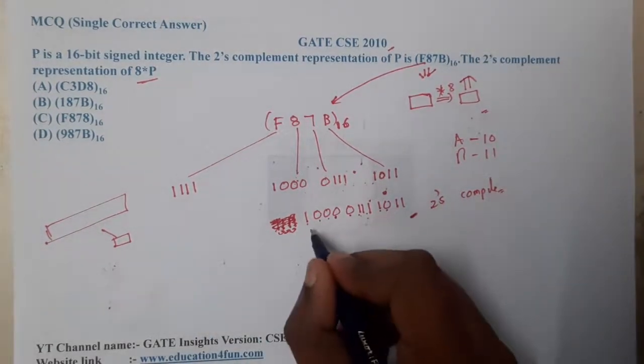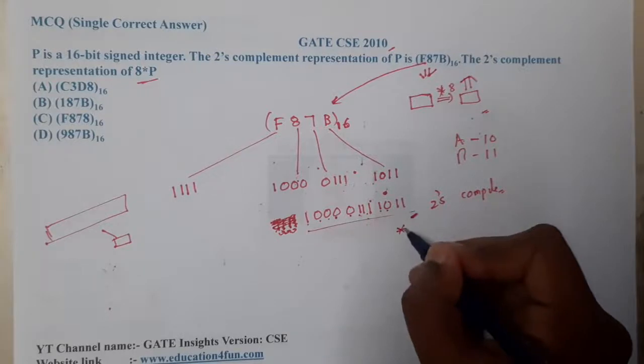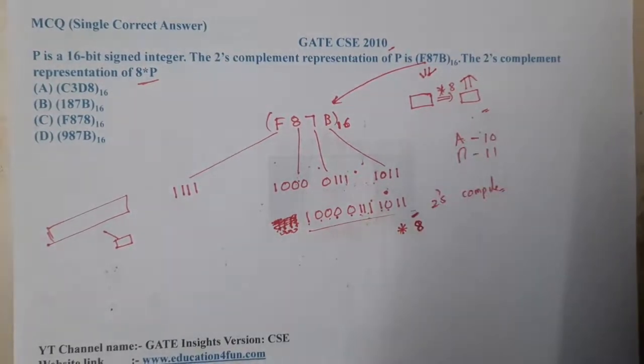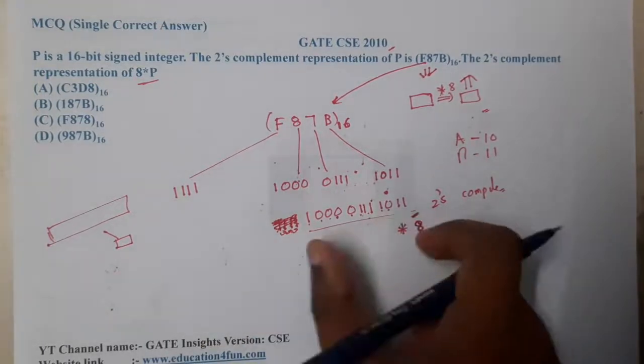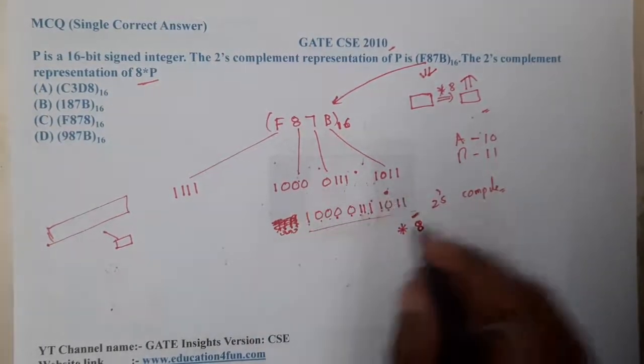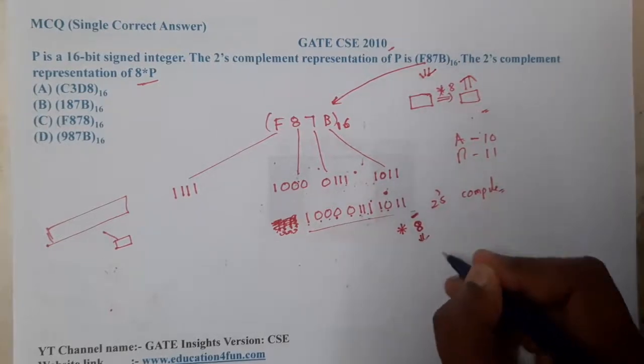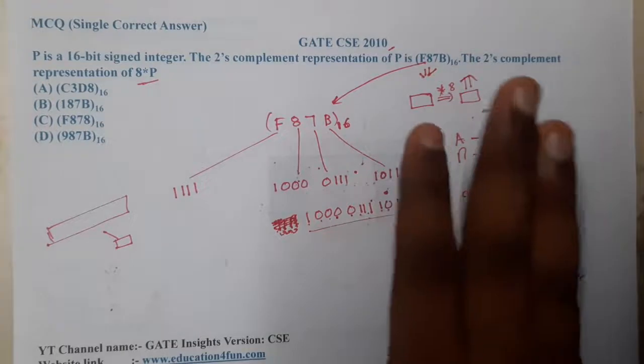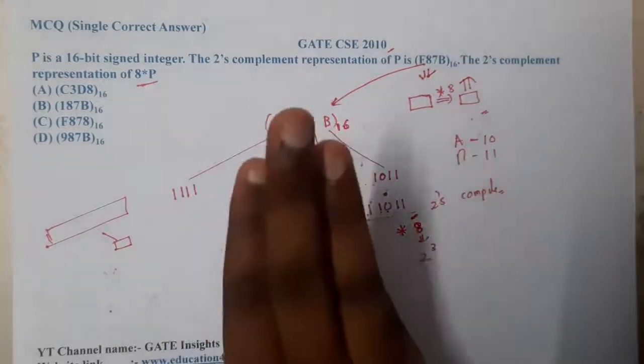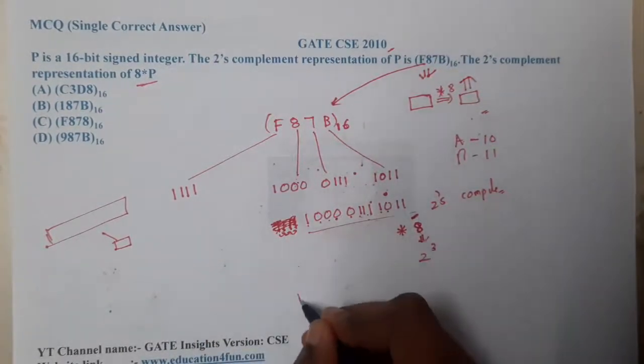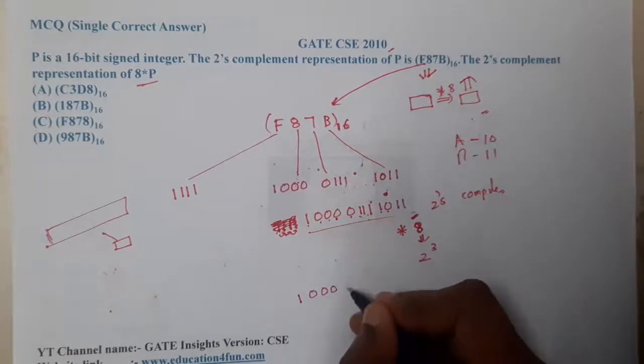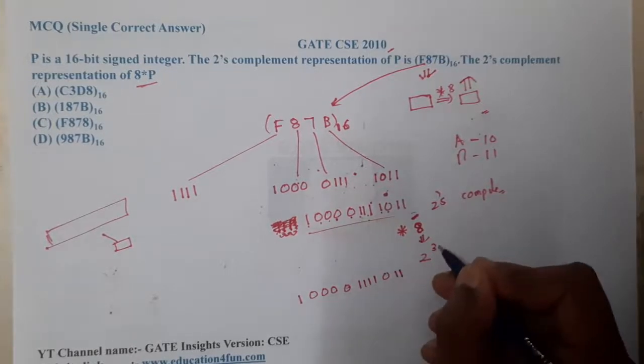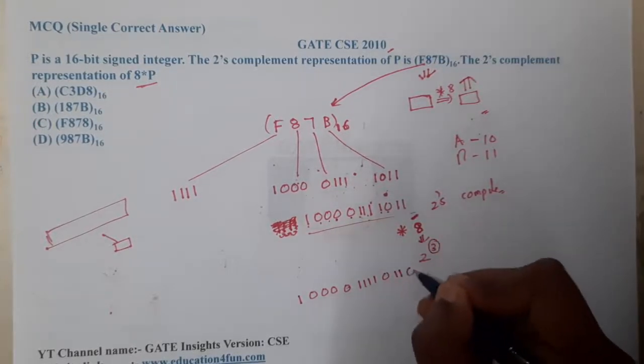Now we need to multiply this with 8. Most of you will be thinking we're at the same process of conversions, but when you are working with binary there is a small advantage. You can write 8 as 2 power 3. The simple trick here is just shift these bits by three bits. Indirectly, it is 1000 0111 1011 000. Just add that number of zeros at the start.